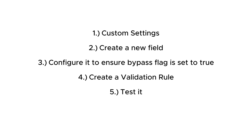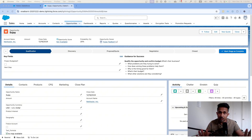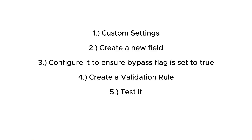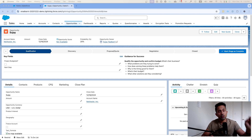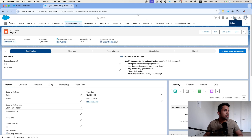Second, we are going to create a new field of type checkbox to understand whether the bypass flag is set to true or false. Third, we are going to manage a record — configure the system administrator profile to ensure that the bypass flag is always set to true. Fourth, we are going to create a validation rule. Finally, we are going to test it. We are going to do a live demo so you can follow along.